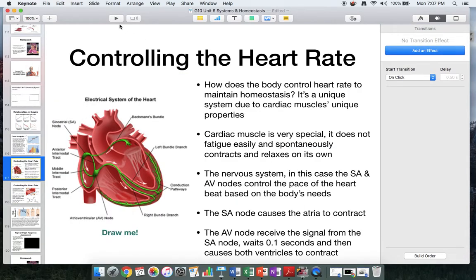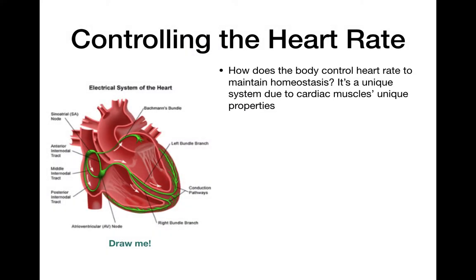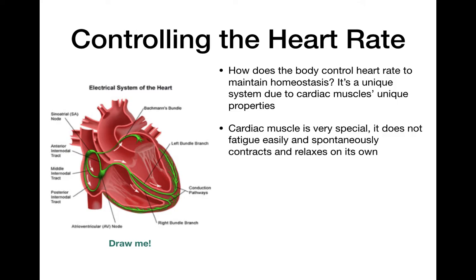So how does our body control heart rate to maintain homeostasis? We know heart rate is an important factor controlled by homeostasis, and it can have a huge effect on transportation of a variety of factors in the body. This is a very different system than how other rates are controlled — like ventilation rate or growth rate. Those are a lot simpler in their control mechanisms than heart rate, because cardiac muscle that makes up the heart is very special and unique — it doesn't get tired easily, and can pretty much just beat forever if it's a healthy heart.